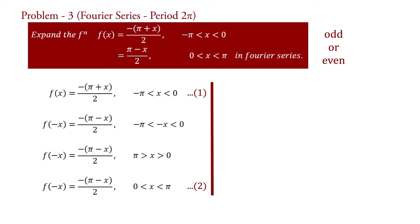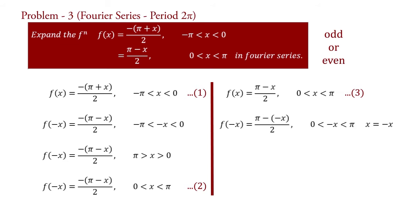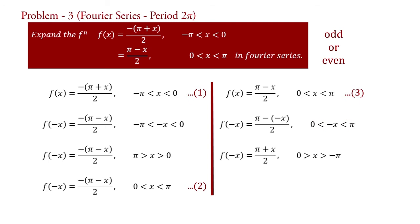The second part of the function is f(x) equal to (pi minus x)/2 for 0 less than x less than pi — say equation 3. Take x equal to minus x. Therefore, f(minus x) equal to (pi plus x)/2 for 0 greater than x greater than minus pi. Writing the interval in inverse order, f(minus x) equal to (pi plus x)/2 for minus pi less than x less than 0 — say equation 4.